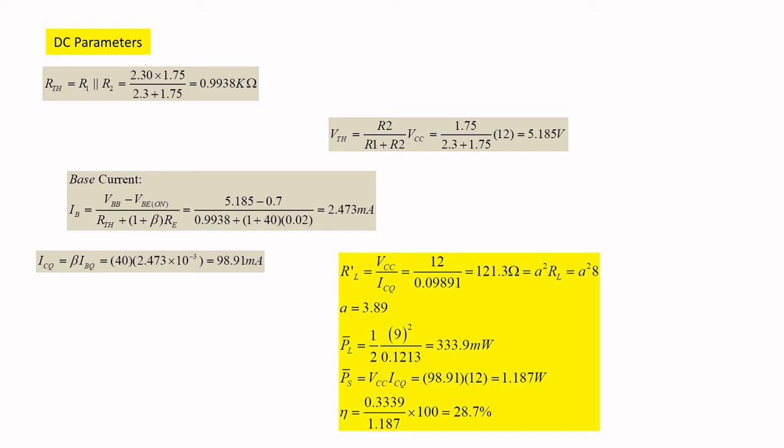Theoretically, when you see in theoretical lecture, I have explained you like 50 percent when you modify your class A power amplifier with the transformer coupled class A power amplifier. But, practically in the mathematical analysis with the given values, you have determined to be 28.7 percent. I hope this is clear. You will see the next problem in the coming class. Thank you.